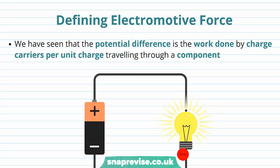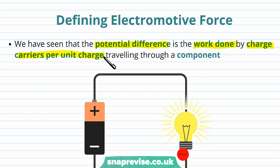We're going to start off by defining what electromotive force actually is. We have seen that the potential difference is the work done by charge carriers per unit charge travelling through a component.